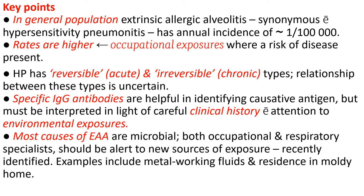Key points of HP in the general population: extrinsic allergic alveolitis, synonymous with hypersensitivity pneumonitis, has an annual incidence of about 1 per 100,000 population. Rates are higher due to occupational exposure. HP has reversible acute or chronic types; the relationship between these types is uncertain. Specific IgG antibodies are helpful in identifying causative agents but must be interpreted in light of careful clinical history. Most causes of extrinsic allergic alveolitis are microbial. Both occupational and respiratory specialists should be alert to new sources of exposure, including metal working fluids and residents in moldy homes.